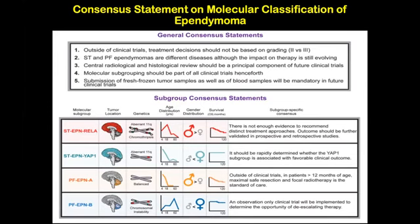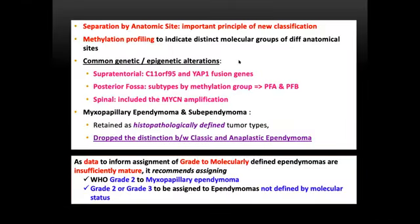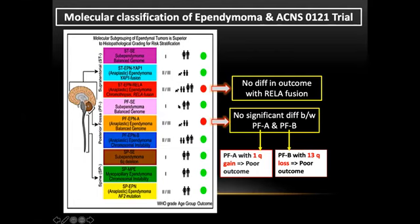Beyond WHO grading, we should also remember c-IMPACT (Consortium to Inform Molecular and Practical Approaches to CNS Tumor taxonomy), now on update 7, which specifically addresses ependymal tumors. C-IMPACT has dropped the terms 'classical' and 'anaplastic' ependymoma, graded myxopapillary as WHO grade 2, and suggests that if molecular status is unknown, mark it as grade 2 to 3.